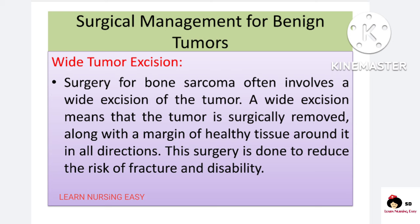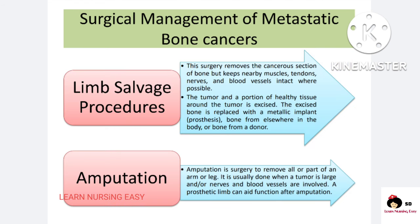In surgical management, we first identify whether the tumor is benign or malignant. For benign tumors, we perform wide tumor excision — in this the tumor tissue (bone sarcoma) is removed along with a wide margin including healthy tissue, so that no cancer cells are accidentally left behind — reducing the risk of fracture and disability. For metastatic cancers, a limb salvage procedure is done: the cancerous part of the bone with muscles, tendons, nerves, and nearby blood vessels is removed, and the healthy tissue is replaced with a metallic implant, prosthesis, patient's own bone from elsewhere, or a donor bone — preserving the limb.